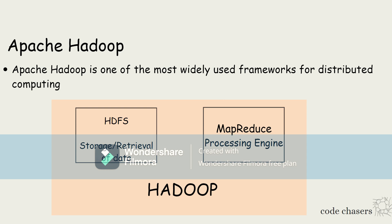Now you can observe Apache Hadoop on the screen. Apache Hadoop is one of the most widely used frameworks for distributed computing. Hadoop consists of two parts: the first is HDFS, which is mainly used for storage and retrieval of huge amounts of data.